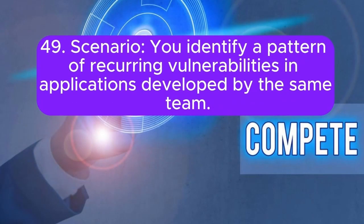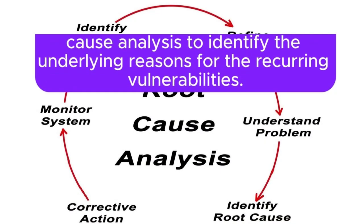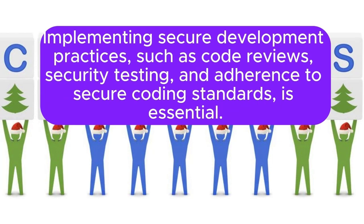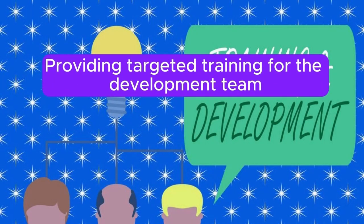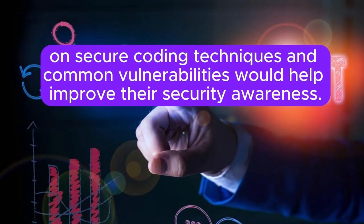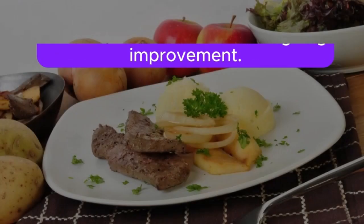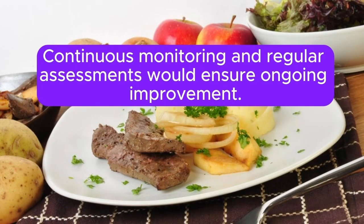Scenario 49: You identify a pattern of recurring vulnerabilities in applications developed by the same team. How do you address this? I would conduct a root cause analysis to identify the underlying reasons for the recurring vulnerabilities. Implementing secure development practices such as code reviews, security testing, and adherence to secure coding standards is essential. Providing targeted training for the development team on secure coding techniques and common vulnerabilities would help improve their security awareness. Establishing a feedback loop to review and address security issues early in the development lifecycle can prevent future vulnerabilities. Continuous monitoring and regular assessments would ensure ongoing improvement.